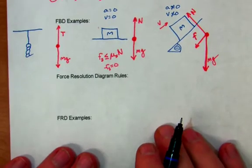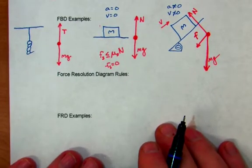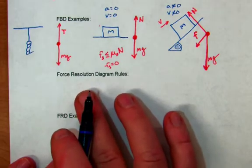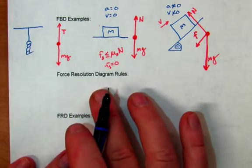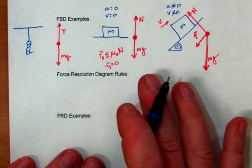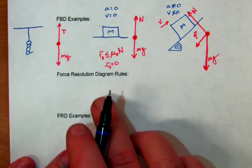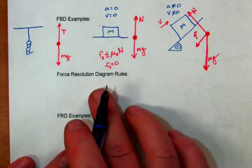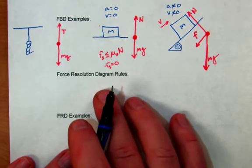Now we're going to look at step two of a free body diagram if you're solving a problem, which is the force resolution diagram. Now, a lot of textbooks won't even have this in it because the traditional way is you would just do this as part of your free body diagram in problem solving. But I've come up with this and I'm now calling it something else because if you do this part on the AP exam at certain places, they will actually take points away.